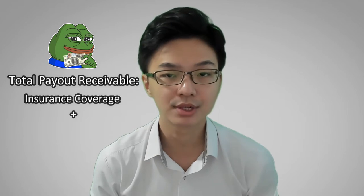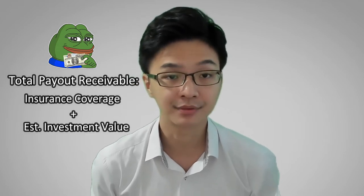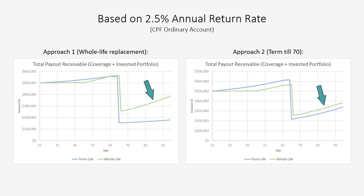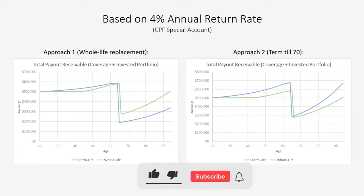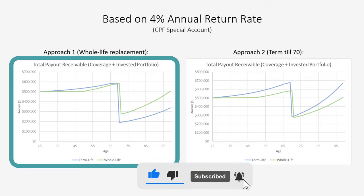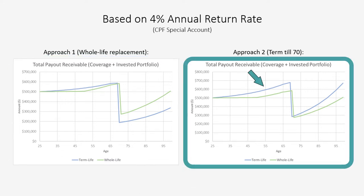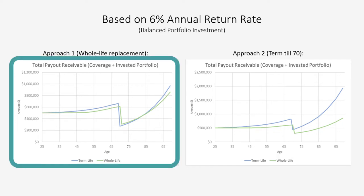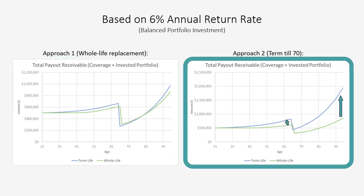Looking at the payout receivable — the total payout receivable is the sum of the insurance coverage receivable plus the estimated investment value. At a 2.5% return rate, a term life plan provides a higher payout receivable before coverage expires or steps down at age 70; beyond 70, a whole life plan provides a higher payout. At 4%, Approach 1 shares the same finding, while for Approach 2, term life yields a slightly higher payout throughout. At 6%, Approach 1 shows very similar payout behaviour between term and whole life, while for Approach 2, term life yields a higher payout throughout the entire duration.